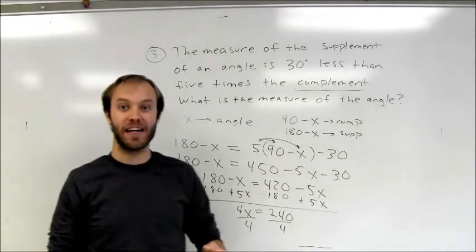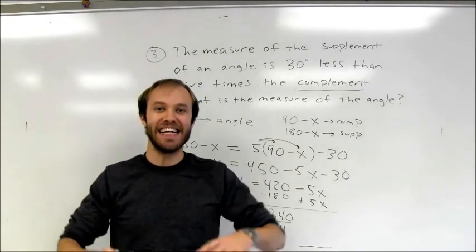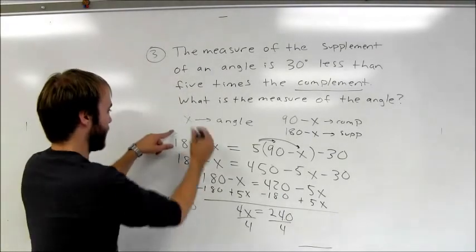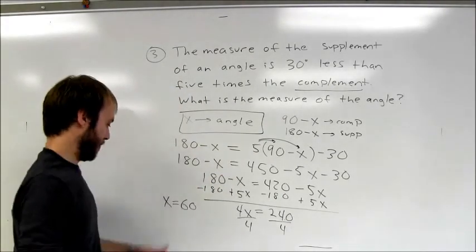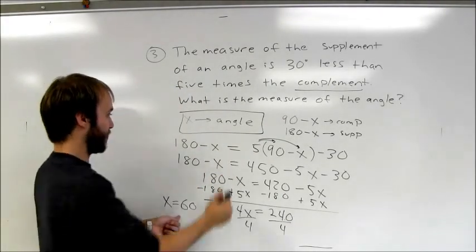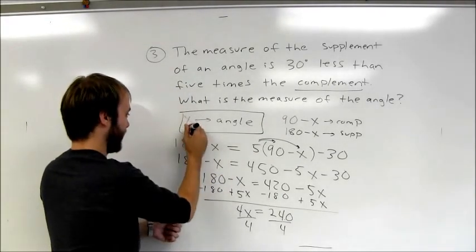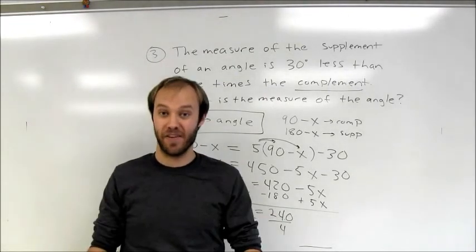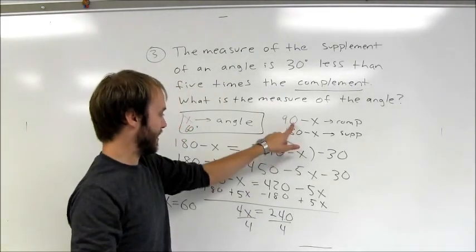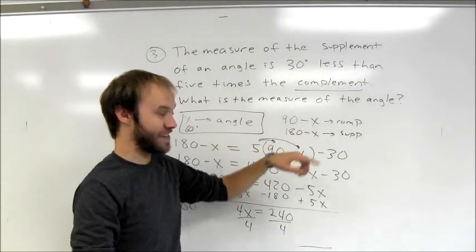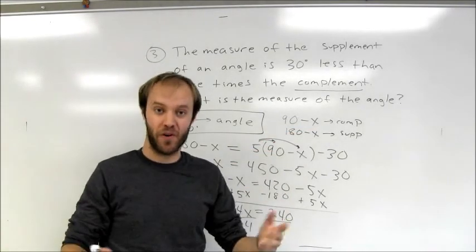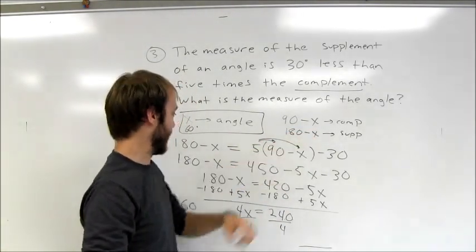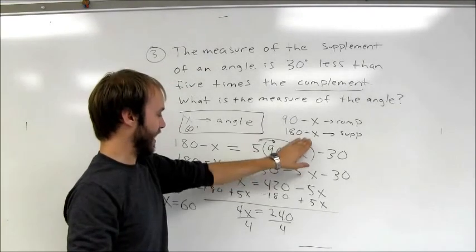Dividing both sides by 4, I find x equals 60. Always go back and check whether you answered the question. Since x represents the original angle, the answer is 60 degrees. Had I been asked for the complement, I would take 90 minus 60, giving 30 degrees, and the supplement would be 180 minus 60, giving 120 degrees.